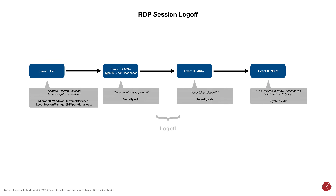For our final scenario, we have an RDP session log off with four event IDs of interest. Event ID 23, 'Remote Desktop Services session log off succeeded,' found in the local operational event log. Event ID 4634 type 10 or 7, 'An account was logged off,' in the security event log. Event ID 4647, 'User initiated log off,' also in the security event log. And event ID 9009, 'The desktop window manager has exited with code X,' found in the system event log — the only one of these in that particular log.